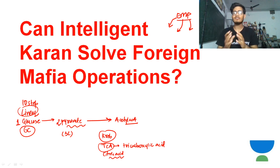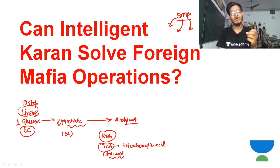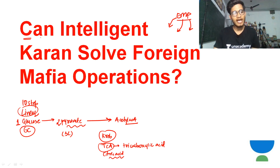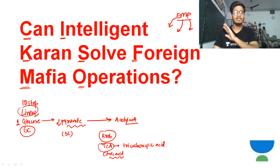Here is a trick - there is a detective named Karan who has to solve a foreign mafia operation. A higher authority is sent Karan's profile and asks: 'Can Karan solve this foreign mafia operation?' This trick uses simple English words with no complex gaps. It is a foolproof trick - 'Can Intelligent Current Solve Foreign Mafia Operations?' From this single line, you can easily memorize the whole Kreb cycle.